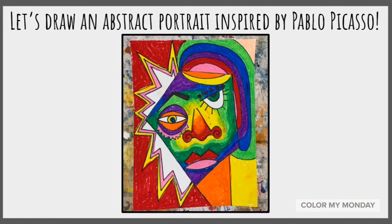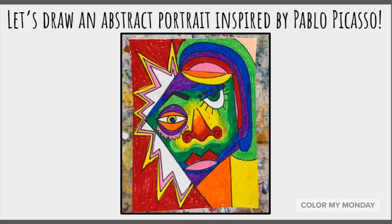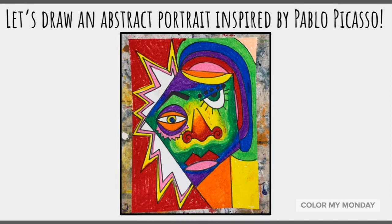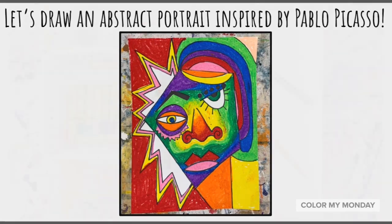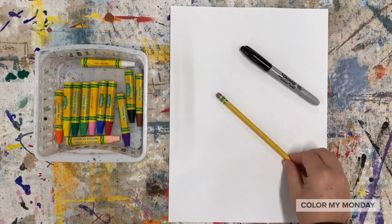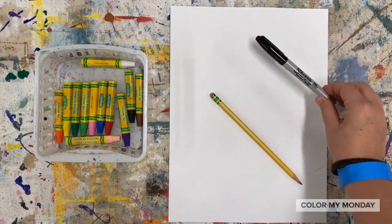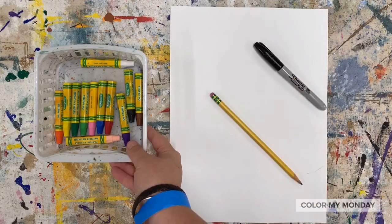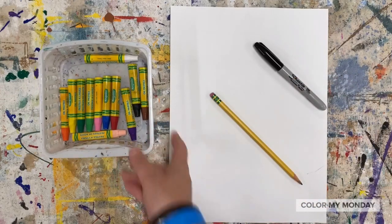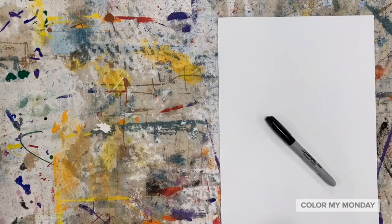Let's draw an abstract portrait inspired by Pablo Picasso. For this project, you'll need a sheet of paper. You can use a pencil or a marker to draw, and then something to color with. I'm using oil pastels. You use whatever it is that you have to color.